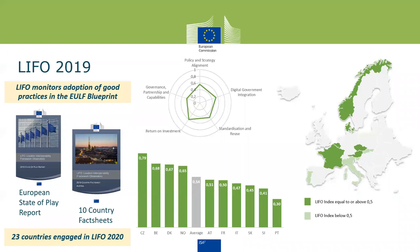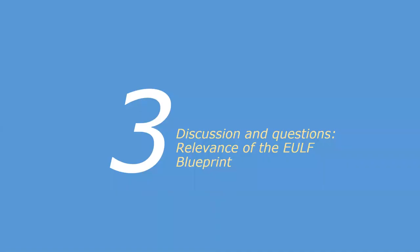I'll finish this section by saying something about the observatory. You'll see some of the outputs — country fact sheets based on questionnaire responses and an overall European state of play report. The first run of the observatory was in 2019 with 10 countries, and we're currently engaged with 23 countries for LIFO 2020. You will see the outputs from that in the coming months, including a follow-up webinar to look at the results.